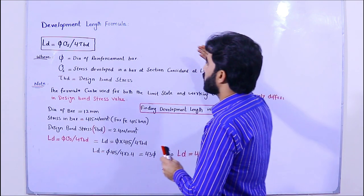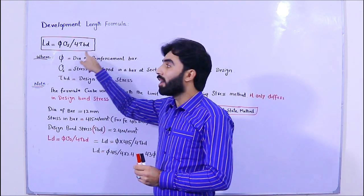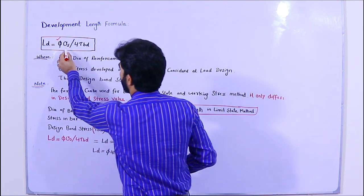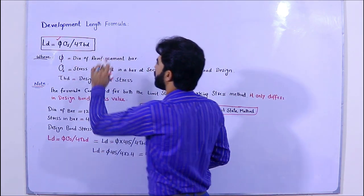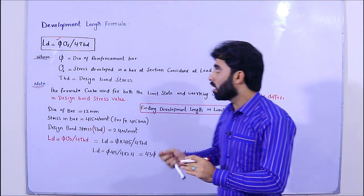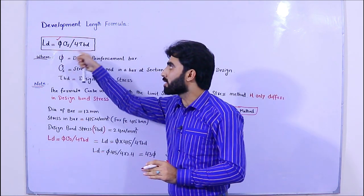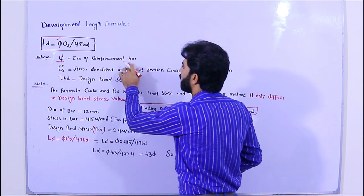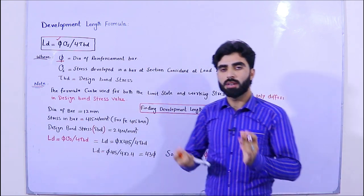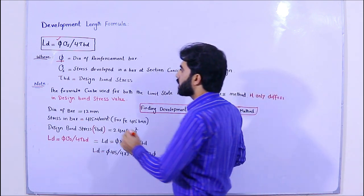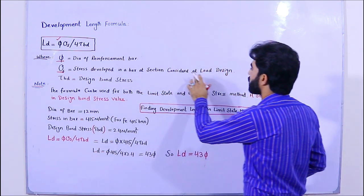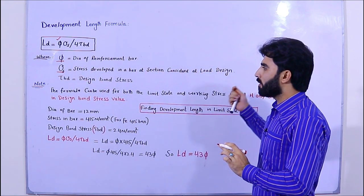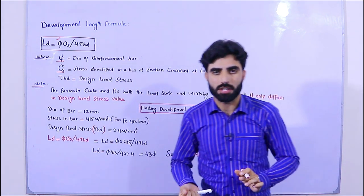What is the development length formula? The development length formula is: Ld = φ · σs / (4 · τbd). Now let me show you in detail what these symbols mean. φ is the diameter of the reinforcement bar — maybe 12 mm, 14, 16, 20, 25, etc. The second one is σs, which is the stress developed in the bar at the section considered at load design. We have different σs values for different grades of concrete and steel.